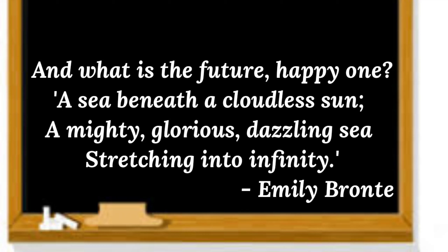Poet Emily is talking about three time periods: past, present, and future. The poem is a conversation between the poet and a child, where the child compares life with seasons — autumn representing the past, spring representing the present, and summer representing the future.